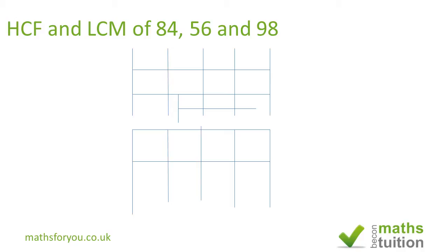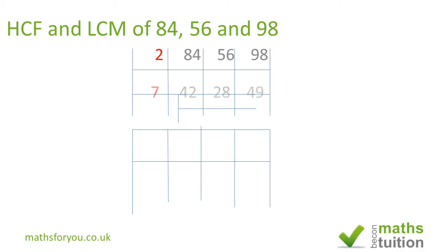The first thing to do is to see if we can divide 84, 56, and 98. We need to exhaust all the prime numbers first. All three numbers are even, so if we divide by 2, we get 42, 28, and 49.